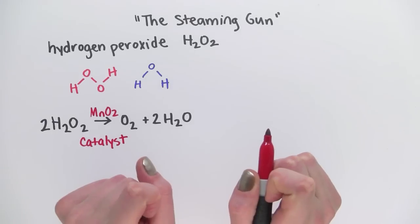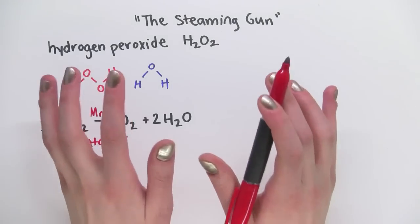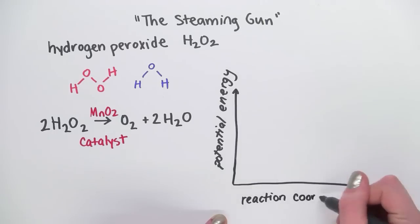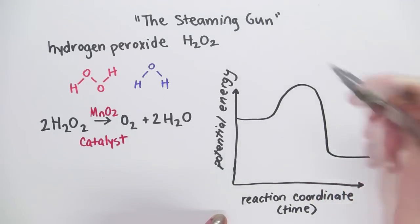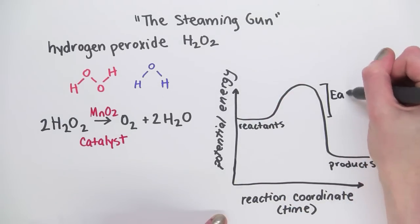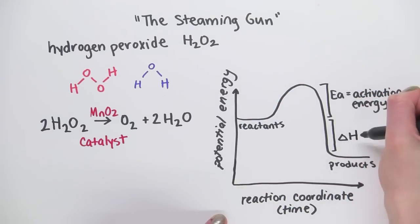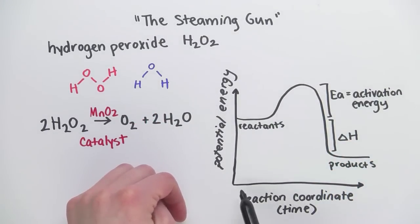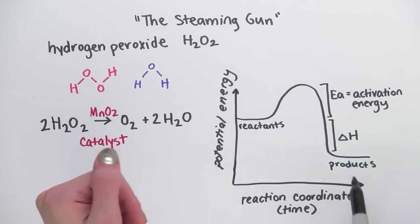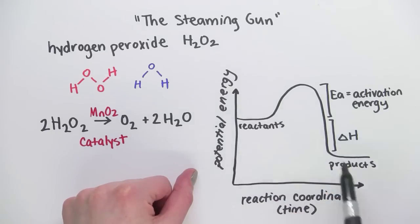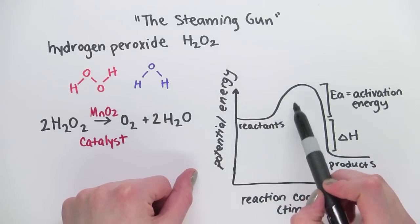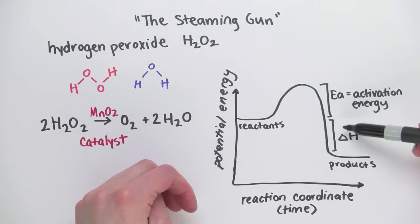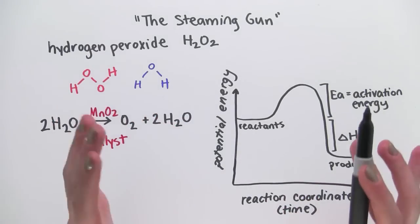So let's talk about how a catalyst works. I'm going to draw a potential energy diagram for this reaction. So here's my potential energy diagram. I've got potential energy on the y-axis and the reaction coordinate, or time, on the x-axis. The reactants are starting at this amount of energy, and the products have this amount. Here, Ea, that's the activation energy. It's the amount of energy you need to add to the reactants to make the reaction go. And delta H, that's the amount of energy that's released when the reaction happens.